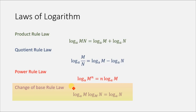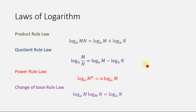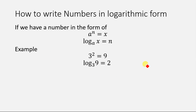According to the change of base rule, if we have two logarithmic terms — log base a of n and log base m of n — and this m of the first log is equal to the base of the second log, then we can write the whole expression as log base a of n. Before deriving these equations, we need to learn about how to write a number in logarithmic form.